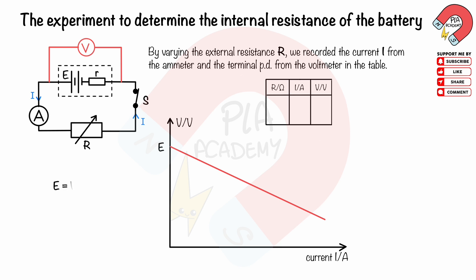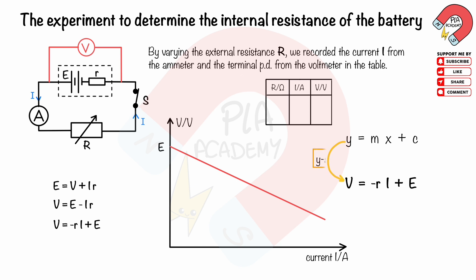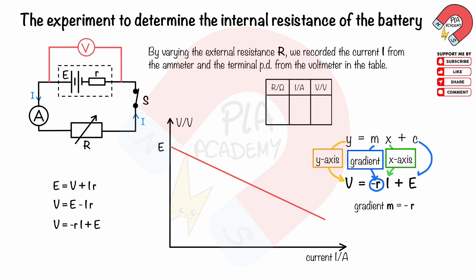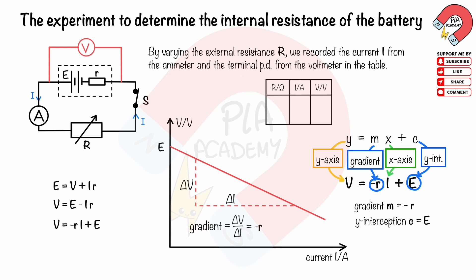From the equation of the EMF: E equals V plus Ir, we rearrange to get V equals E minus Ir, or V equals negative rI plus E. Comparing with the equation of a straight line, Y equals MX plus C: the Y-axis represents the terminal PD V, the X-axis represents the current I, the gradient M equals negative internal resistance r, and the Y-intercept C equals the EMF E. So we can calculate the internal resistance of the power supply using the gradient of the graph.